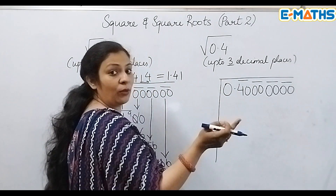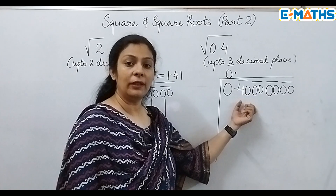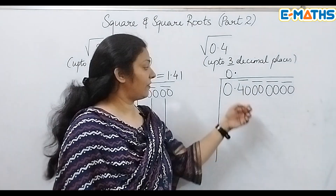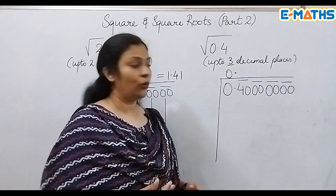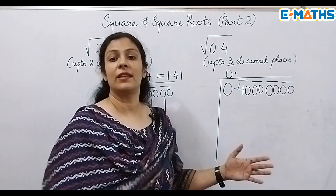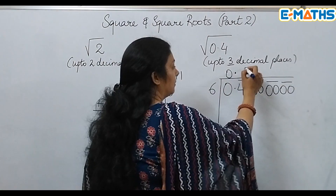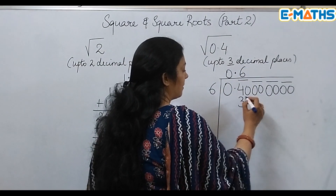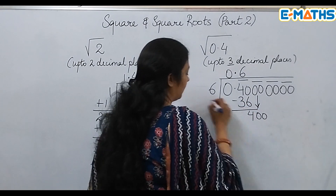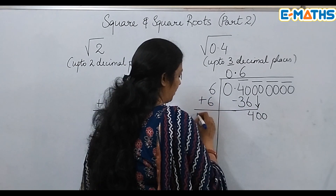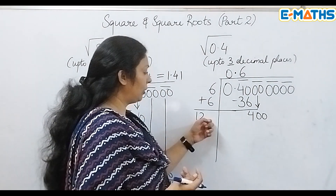Our number starts from the decimal point, so I'll take a 0 here and put a decimal point. I need a number which when multiplied by itself gives me 40 or a number lesser. 6×6 = 36 and 7×7 = 49 — I cannot take 7 because it gives a larger number. So I take 6: put a 6 in the quotient, 6×6 = 36, remainder 4. Bring down the next pair, and add 6 on the left side.